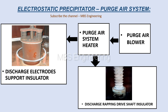Please refer to the ESP purge air system block diagram and working layout for better understanding. Step one: the purge air system is a combination of heaters and air blowers. Step two: it provides hot air to preheat insulator compartments and preheat the discharge drive shaft insulator. Step three: the system generates high temperature air to insulator compartments and maintains positive pressure inside them, preventing dust from going up through the HV insulators. Step four: this system assists in reducing localized sparking, moistness level, and corrosion factors in the ESP's internal parts.